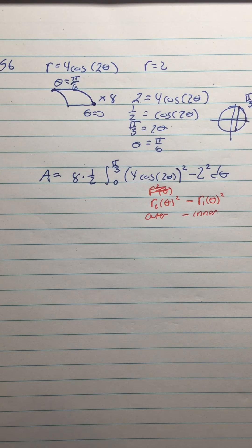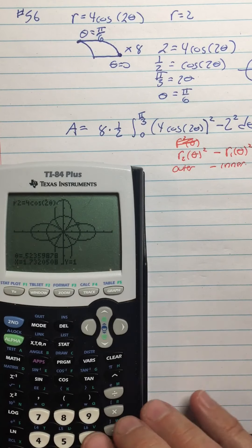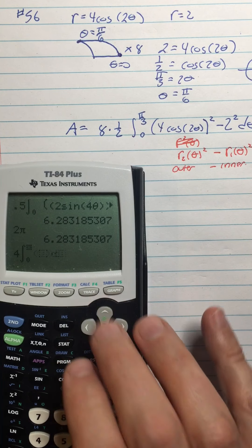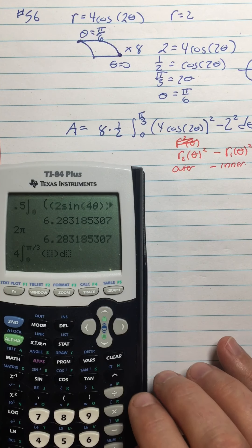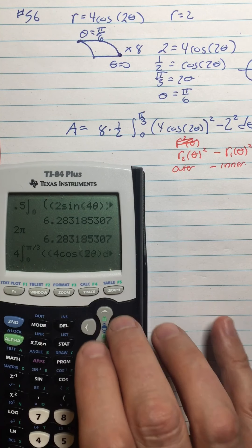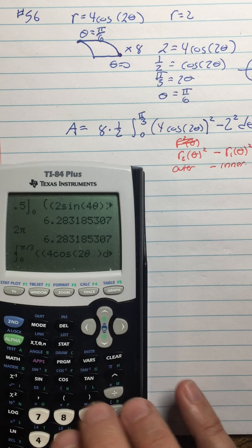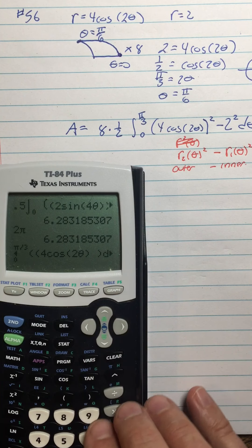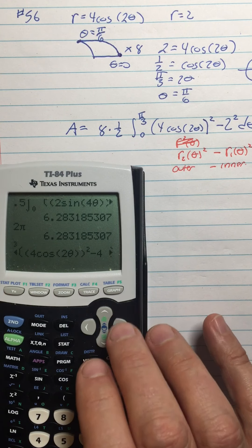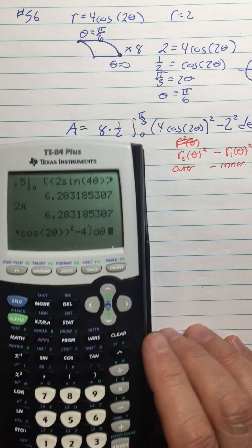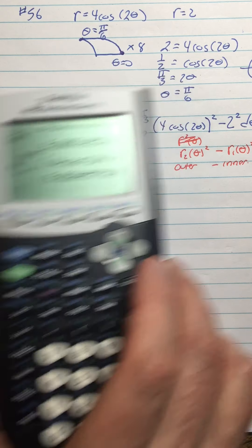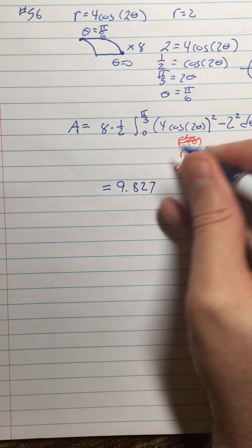I'll throw that in my calculator. I'm going to simplify the eight times one half and call it four. Math 9 for an integral, I'm going to go zero to pi over three, and I'm going to need parentheses: four cosine two theta squared, minus four. I'm still on polar mode so it's still giving me d theta, which is nice but not necessary. Hit the enter and it's 9.827.